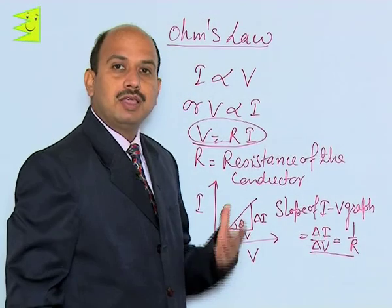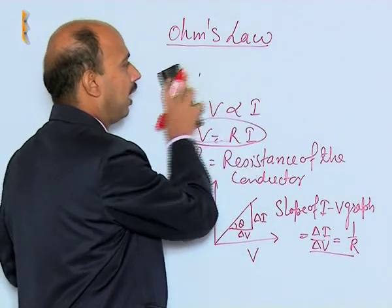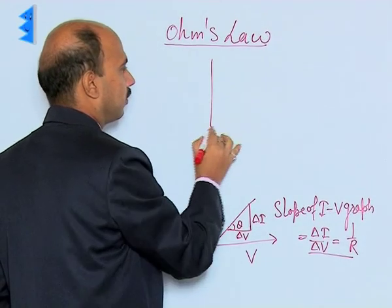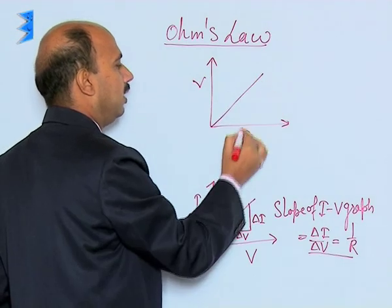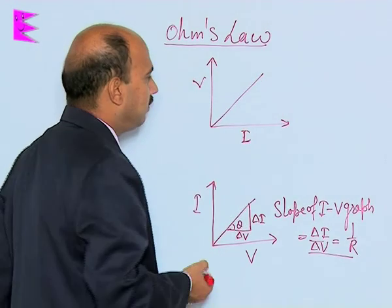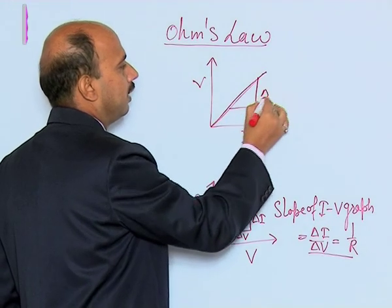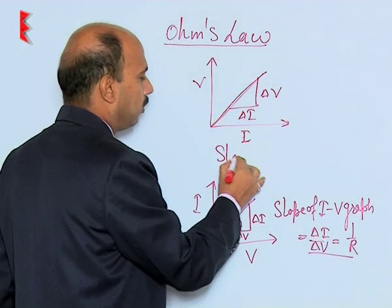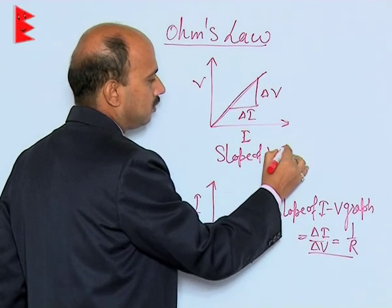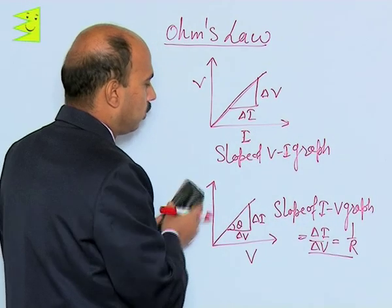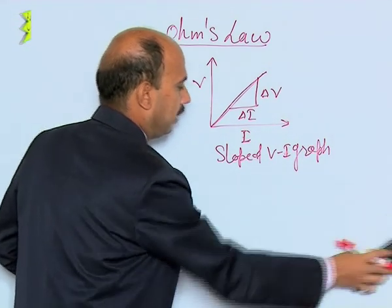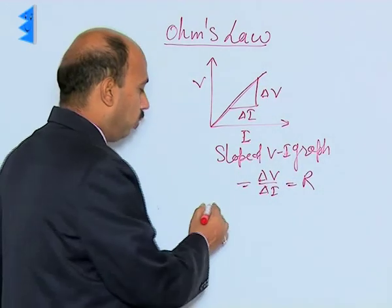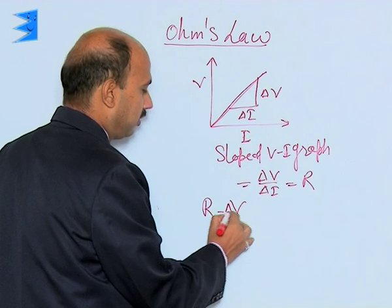If instead we use a V-I graph — with V on the y-axis and I on the x-axis — the graph is again a straight line for Ohm's law, provided temperature and physical conditions remain constant. Then the slope of the V-I graph equals delta V upon delta I, which is equal to R.